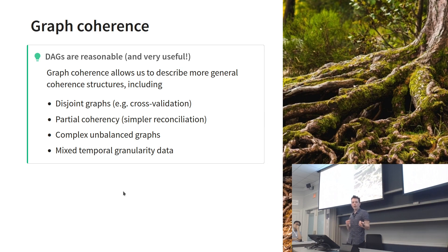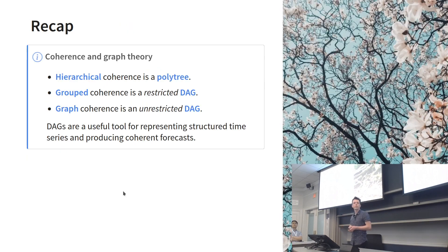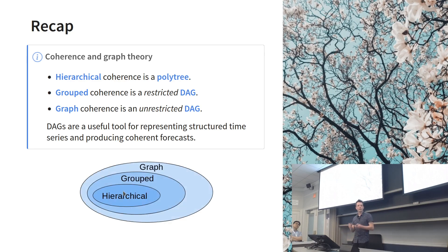So that's graph coherence. DAGs are quite reasonable and useful to apply here. I've shown you a few applications that are more general and useful than just grouped coherence—disjoint graphs with cross-validation, simpler reconciliation structures by choosing not to reconcile some parts, really complex unbalanced things like the GDP example, and hierarchies with data observed at different frequencies. As a recap for the graph theory versions of these concepts: hierarchical coherence is a polytree, grouped is a DAG but with constraints, and if we relax that restriction we get graph coherence, which is quite a useful tool. We have this nested approach.